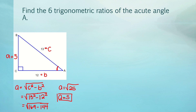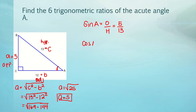Now we can get the six trigonometric ratios with respect to angle A using SOH-CAH-TOA. The opposite side is 5, the adjacent side is 12, and the hypotenuse is 13. So sine A = opposite/hypotenuse = 5/13. Cosine A = adjacent/hypotenuse = 12/13. Tangent A = opposite/adjacent = 5/12. These are the first three trigonometric ratios, and we'll get the remaining three using the reciprocals.